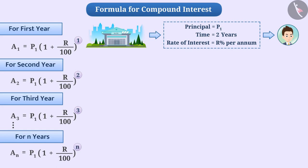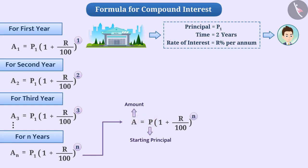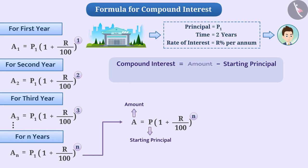Generally, we can write this as A equal to P into bracket 1 plus R by 100 raised to the power N, where P is the starting principle and A is the amount. Now, we can find the compound interest by subtracting the principle of the first year from the amount received at the end of the time period. So, CI is equal to A minus P.